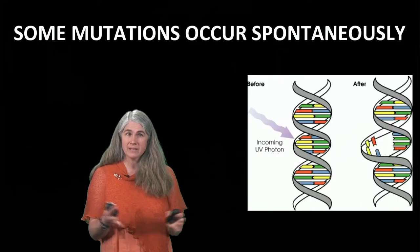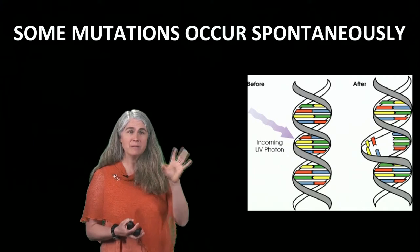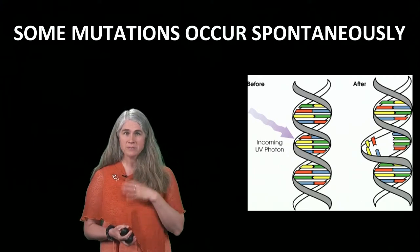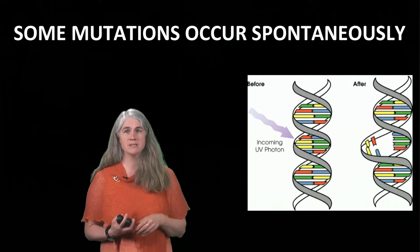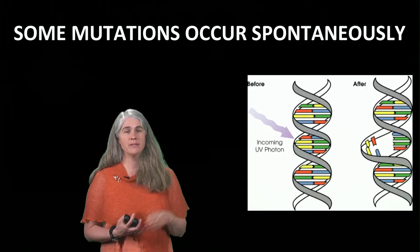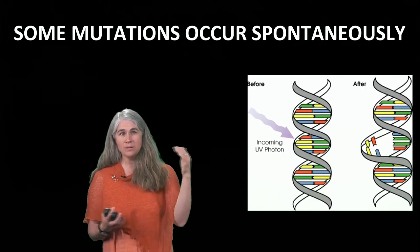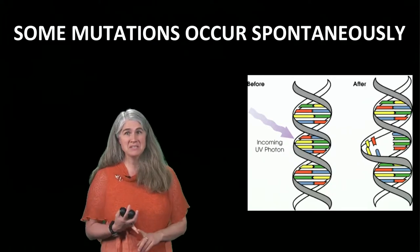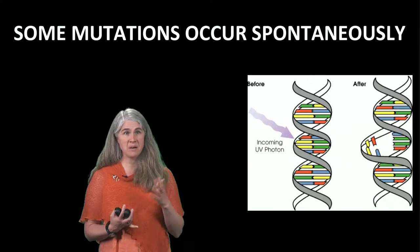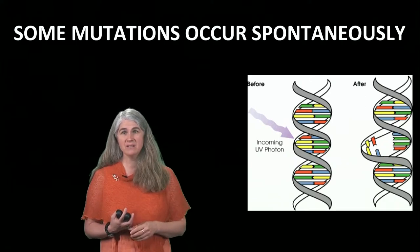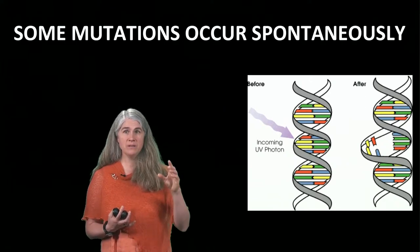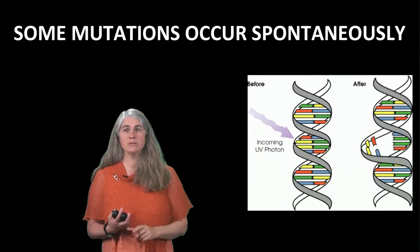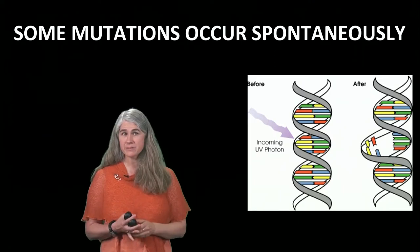Regardless of the mechanism, many, many things can cause mutations. Most are corrected by natural processes. They can be caused by mistakes in normal cellular processes, like copying DNA. They can also be caused by external causes, like UV light or free radicals.